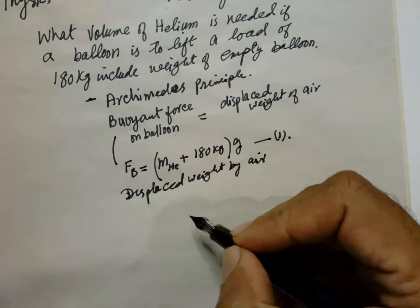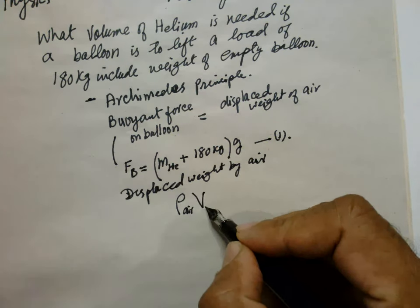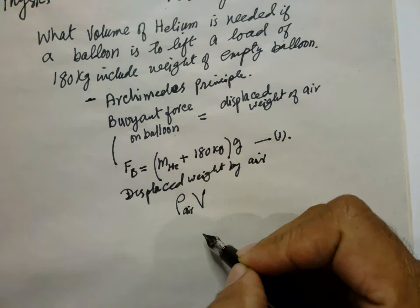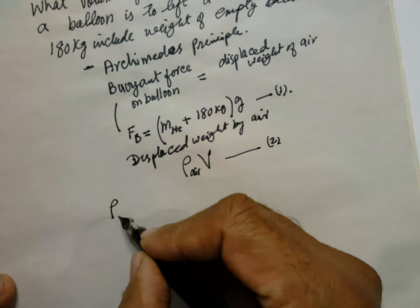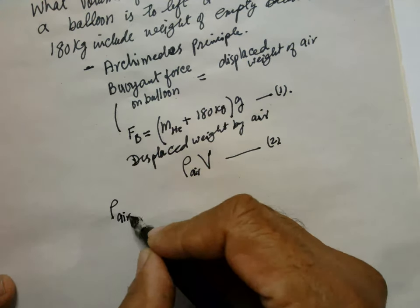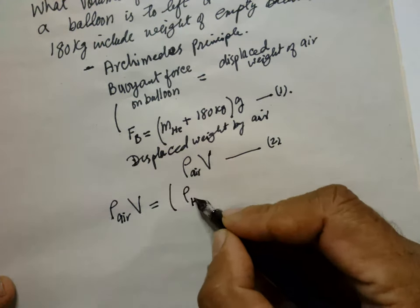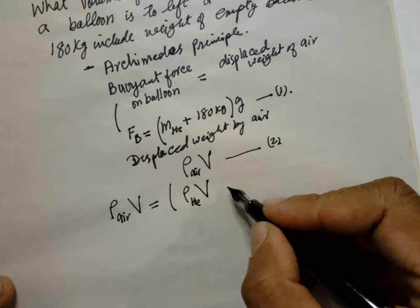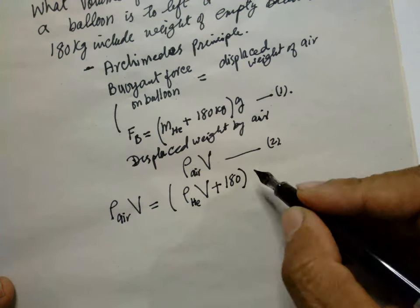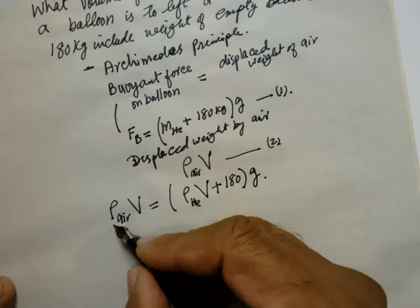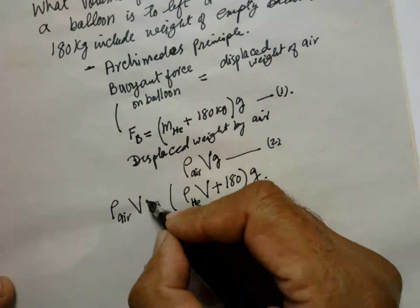Displaced weight by air, so this is the air density multiplied by volume. This is equation 2. Combining these, air density into volume: this mass is equal to density of the helium into the volume plus 180 kg, multiplied by g.